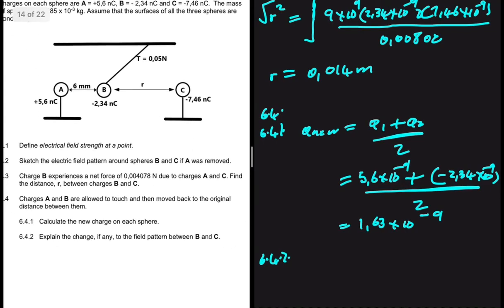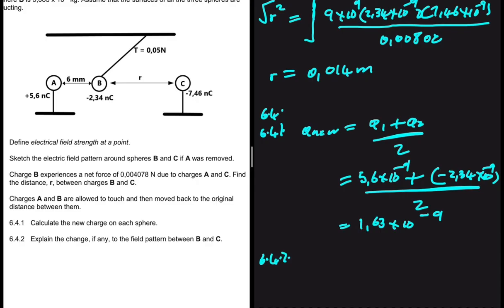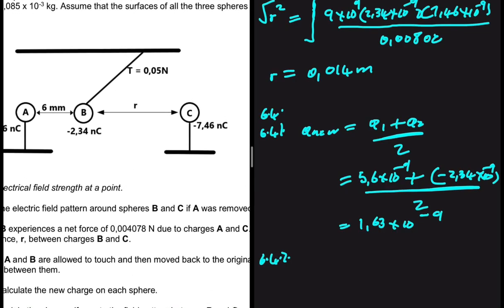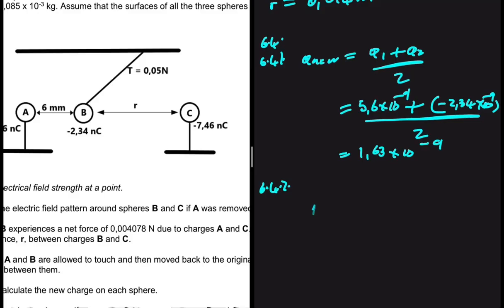6.4.2 explain the change, if any, to the field pattern between B and C. So initially, they were all negative. And now B, our sphere B, is now positive. Our sphere B is now positive and C is still negative. So they're now going to attract. So what happens to the electric field lines when two spheres are attracting? What do they look like?